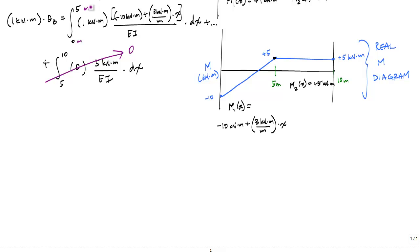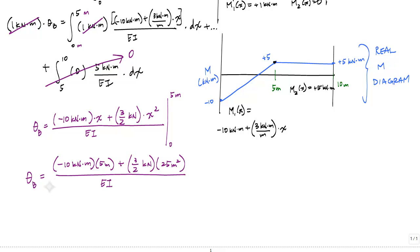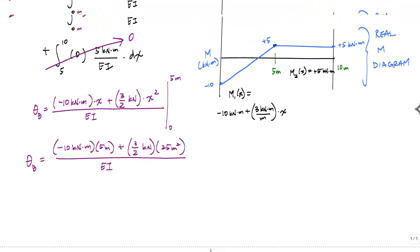I know that these units will cancel out. So here's what the result of my integral is. I think I gave values for E and I at the very beginning. Yes, I did. And now it's just really a bunch of algebra.